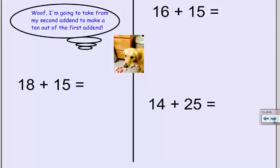Let's try some, and Scoop says, Woof, I'm going to take from my second addend to make a 10 out of my first addend. So, I really rely on knowing my 10 facts. Well, in this question, I'm looking, I've got an 8 here, so I know that I need to take 2 away from that. And so,